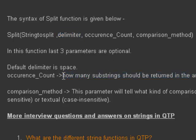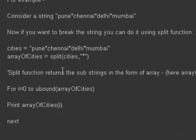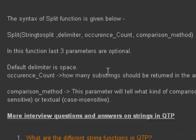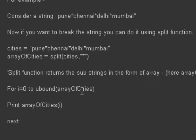Suppose in the above case we have four elements in the array, but you can restrict it using the occurrence count. The comparison method parameter tells what kind of comparison should be used — either binary or textual. So this is how we can use the split function to convert a string into an array. Thank you.